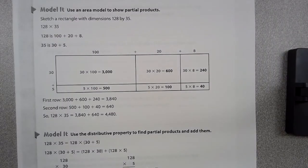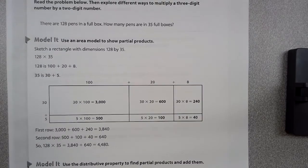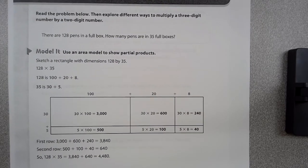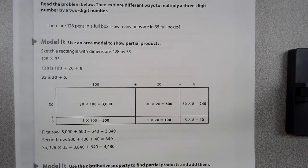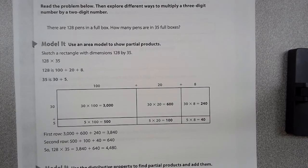If we look, page 36 and 37 is what we call a modeled and guided practice. Basically, the premise of it is something that we could work with, and it gives you examples. It's shown you exactly how to do it. It says, read the problem below, then explore different ways to multiply a three-digit number by a two-digit number. There are 128 pins in a full box. How many pins are in 35 full boxes?